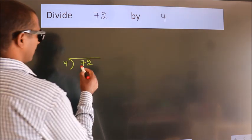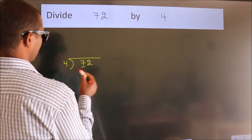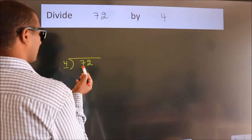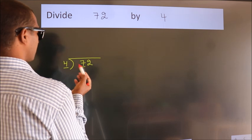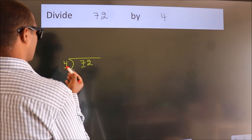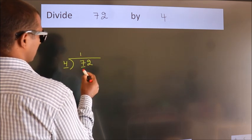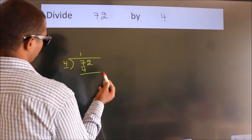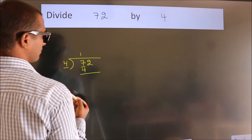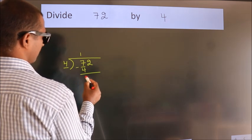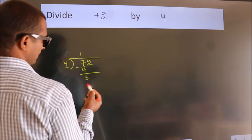Here we have 7, here 4. A number close to 7 in the 4 table is 4 ones, 4. Now we should subtract. We get 3.